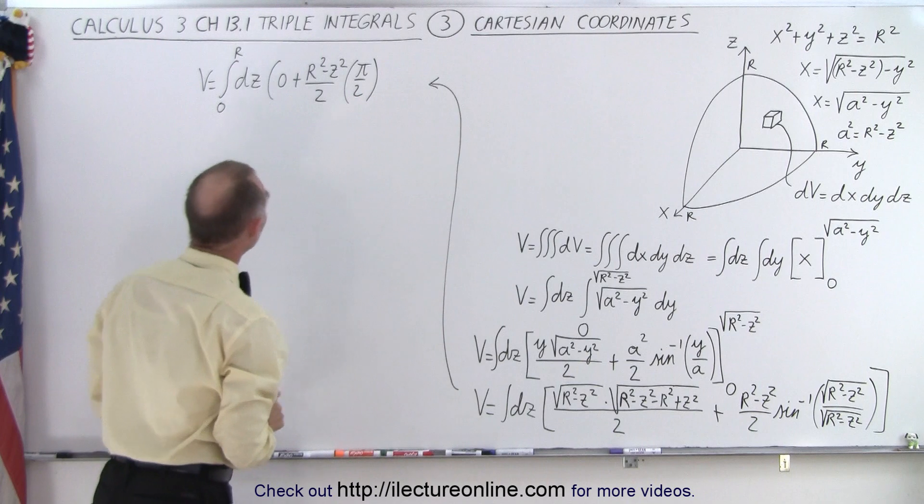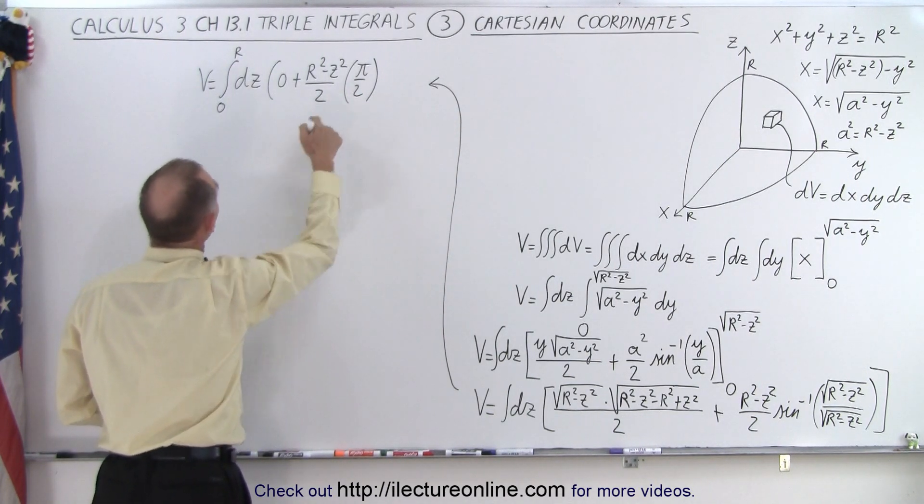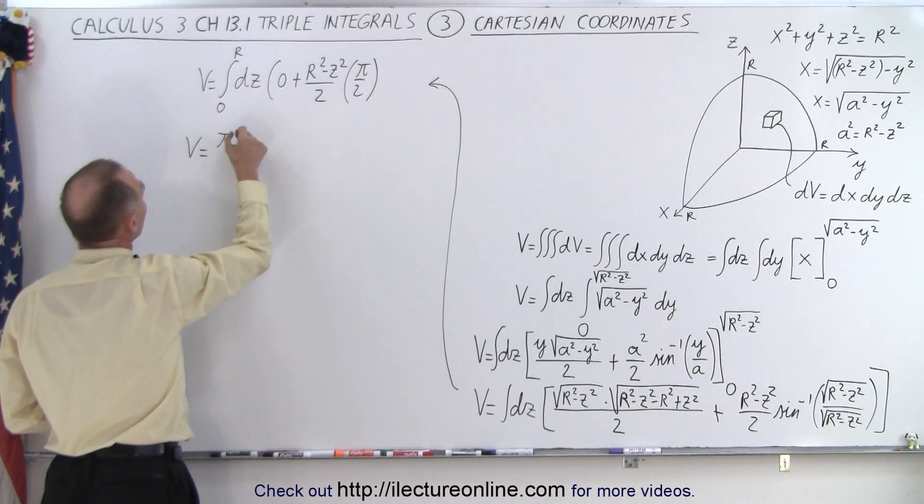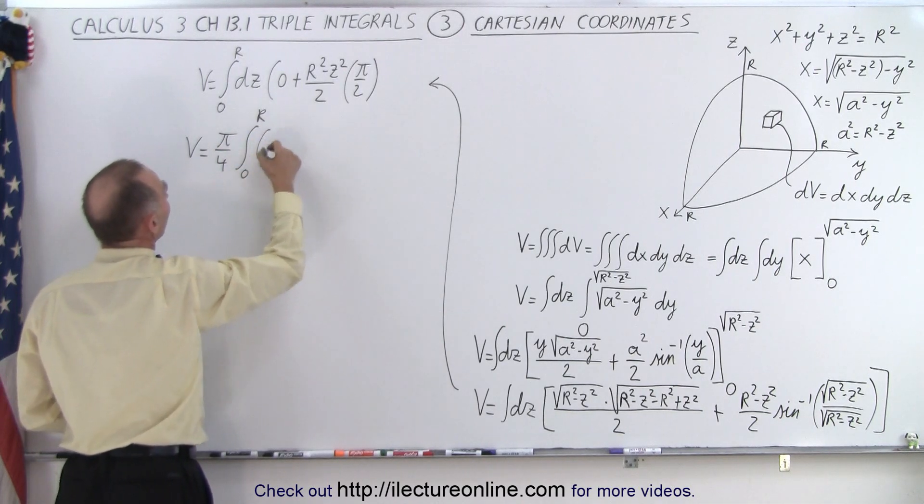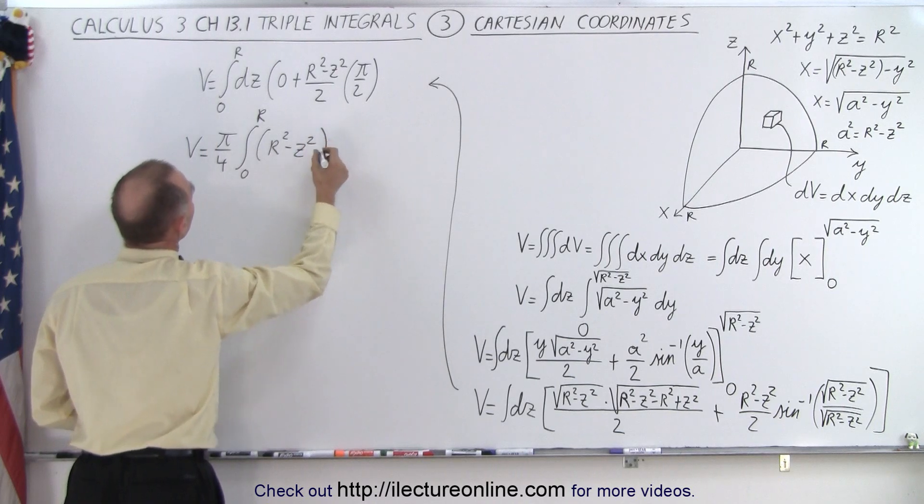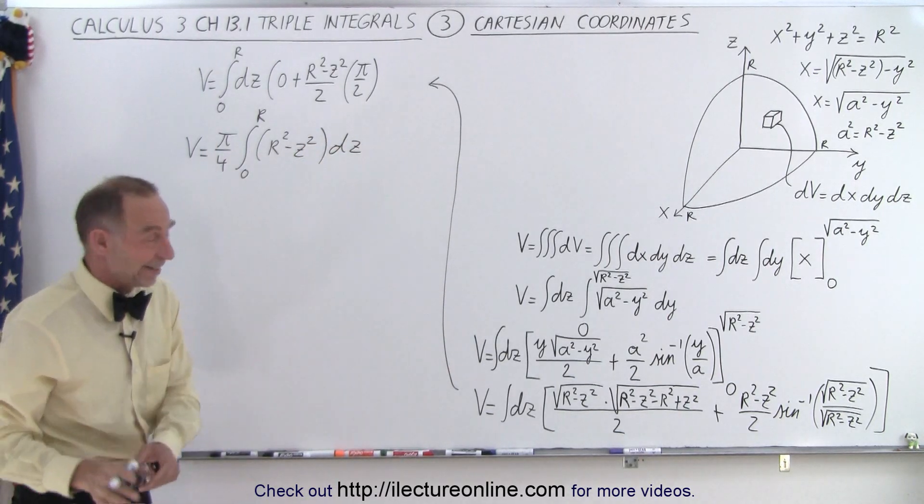So now what we end up here is with two integrals. Well, we can take the 2 out and the 2 here and the π. So v is equal to π/4 times the integral from 0 to r of r² - z² dz from 0 to r, and now that becomes an easy integral to integrate.